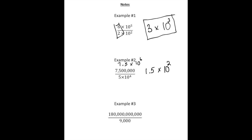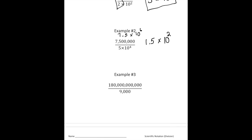Alright, the last one, we have 180,000,000 divided by 9,000. Now again, same as up here, I'm going to transform this first into scientific notation. So that's going to be a 1.8 times 10 to the,